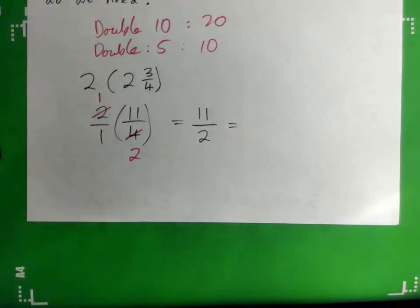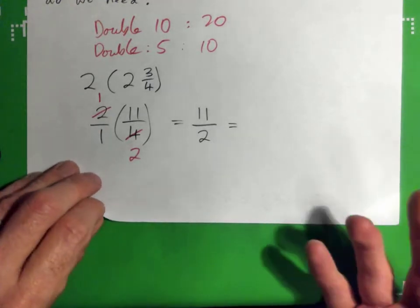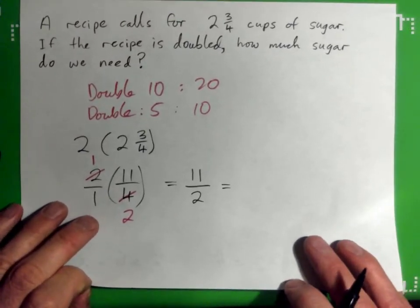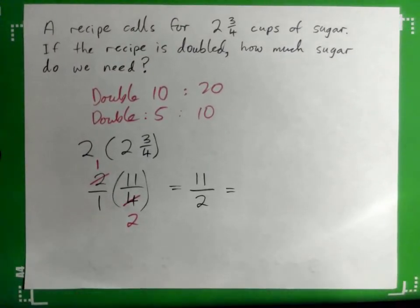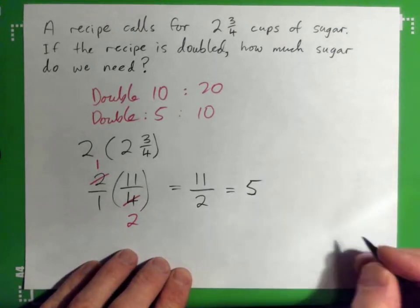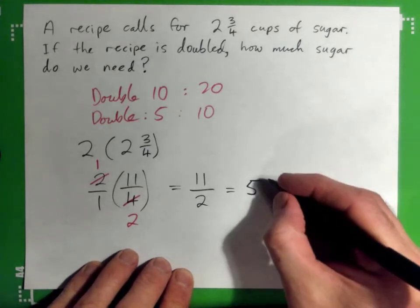And so the answer is eleven over two, and that's correct, kind of hard to understand though. I mean, can I have eleven over two cups of sugar? That's a kind of a weird thing to say, right? So yeah, two and eleven goes five times remainder one, remainder one, so we've got five and a half.